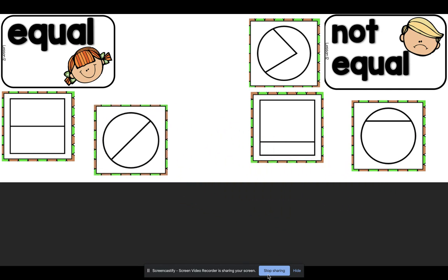The last circle is partitioned in half. Both sides on the circle are the same, so that means they are both equal. Good job.